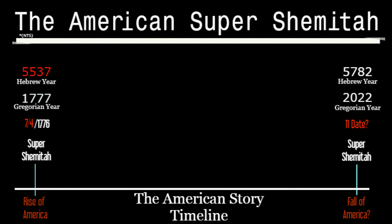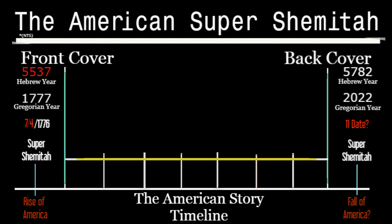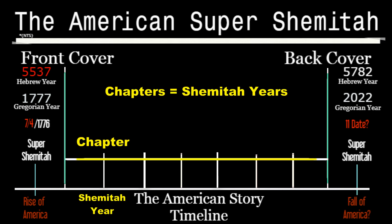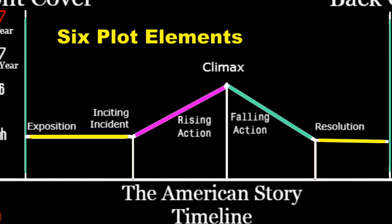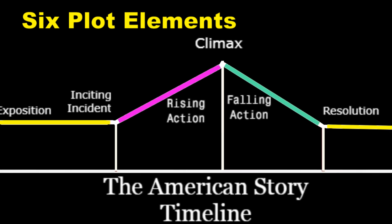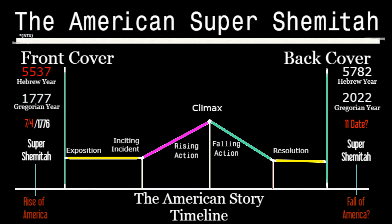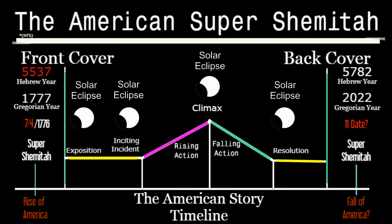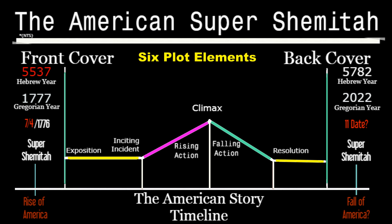God has been revealing unique connections to this Shemitah pattern. Using the metaphor of a book, the Shemitah cycles between the covers represent the chapters of America's story. Like every great story, you have six plot elements: exposition, inciting incident, rising action, climax, falling action, and resolution. Each plot element matches a Shemitah cycle, and the first event — the front cover, the first Super Shemitah — leads into our exposition: the American Revolutionary War.